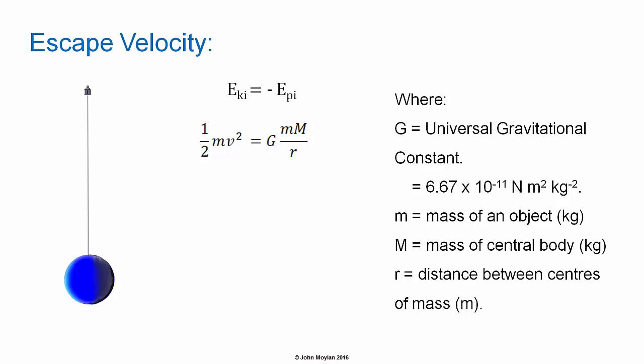Where little m is the mass of the projectile in kilograms, capital M is the mass of the object from whose gravitational field it is escaping, R is the distance between the centers of mass of the two objects in meters, V is the velocity of the projectile in meters per second, and capital G is the universal gravitational constant. We can rearrange that as V squared equals 2 capital G capital M over R, as the little m's cancel. We're left with the equation V equals the square root of 2 capital G capital M over R, where V is the escape velocity.